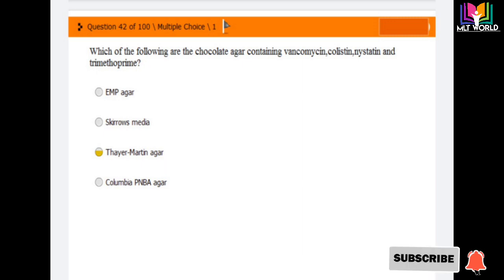Question number 42: Which of the following chocolate agars contain vancomycin, colistin, nystatin, and trimethoprim? Options are: EMB agar, CLED media, Thayer-Martin agar, Columbia CNA agar. The answer is option 3, Thayer-Martin agar. The chocolate agar containing these elements is Thayer-Martin agar.